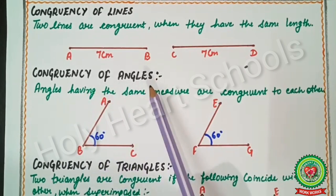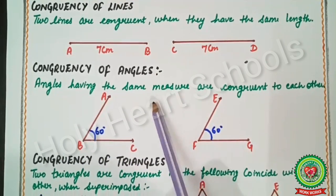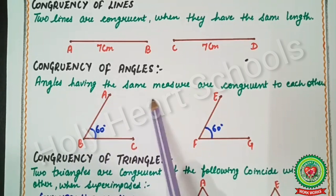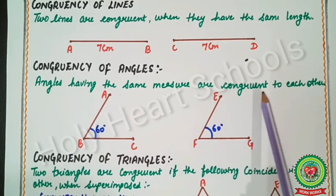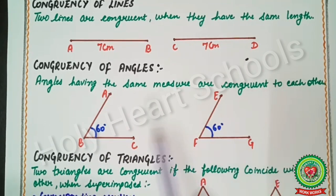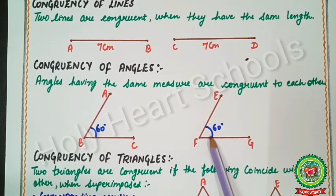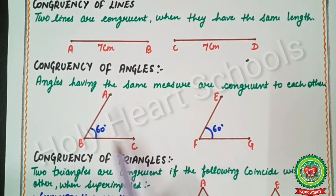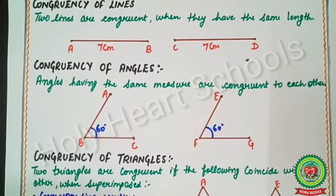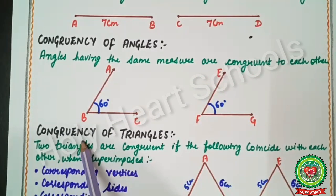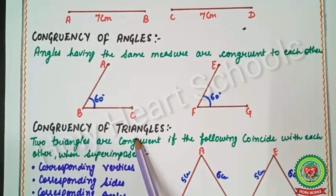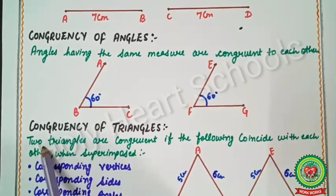Next is congruency of angles. Angles having the same measure are congruent to each other. For example, angle ABC and angle EFG — angle B is 60° and angle F is also 60°, so these two angles have the same measure and are therefore congruent.